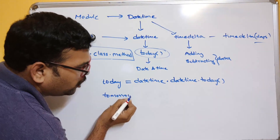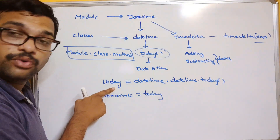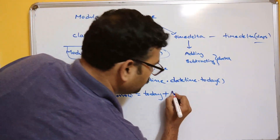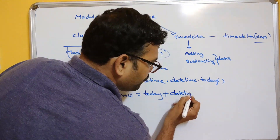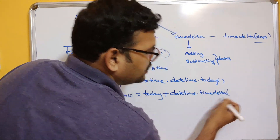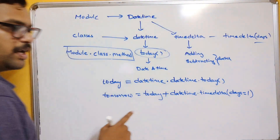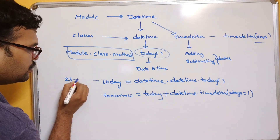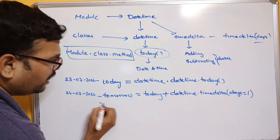For tomorrow, we need to add one day to today. Today's date is in the today variable, so we do today plus timedelta. timedelta is available in the datetime module, so we write datetime.timedelta — this is a constructor and you pass keyword arguments. So days=1 means one day will be added to today's date automatically.